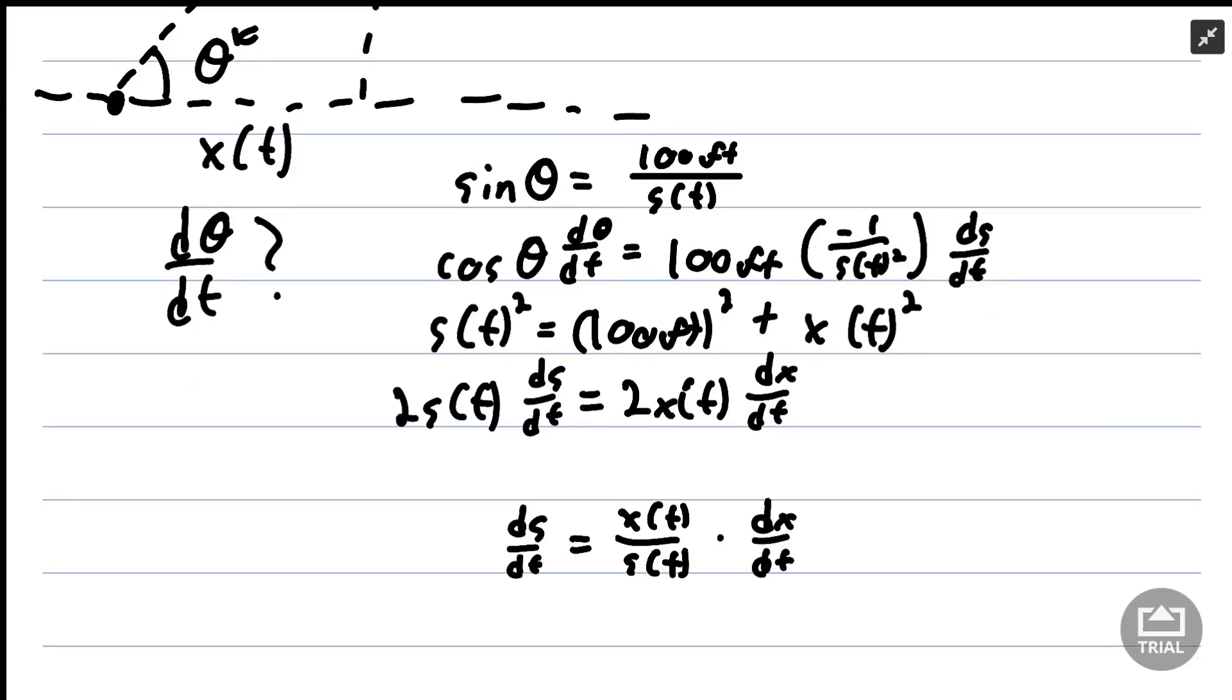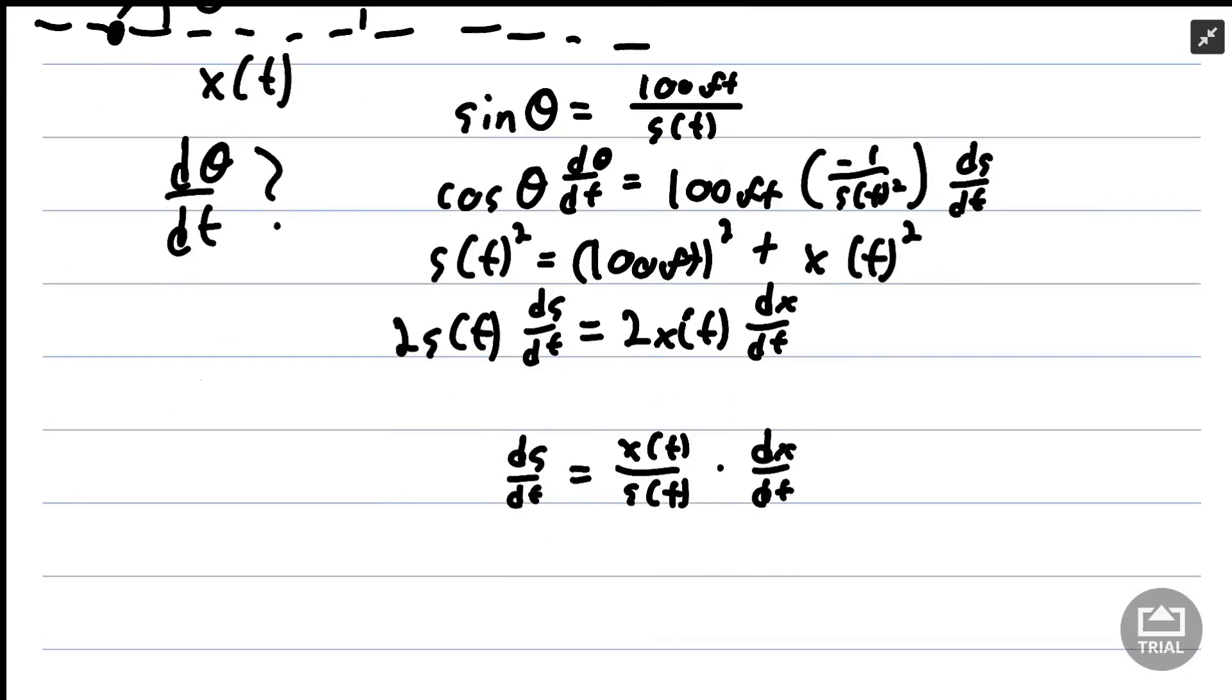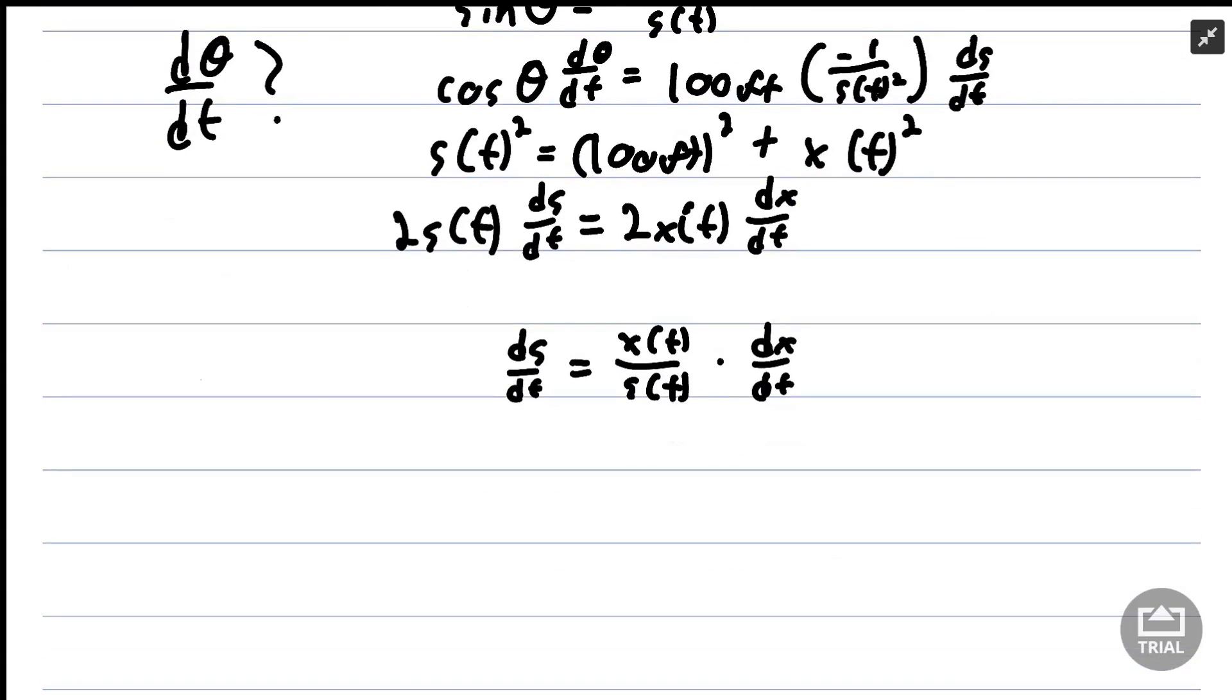Those of you who are good with your trig will notice almost right away that x(t) is our adjacent to the theta we're interested in, and s(t) is our hypotenuse. So x(t) divided by s(t) is actually cosine of theta.